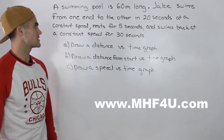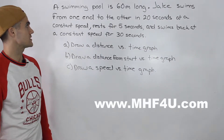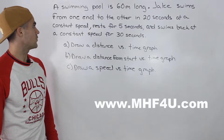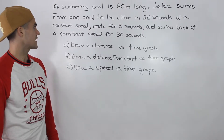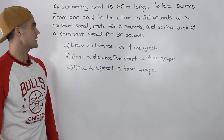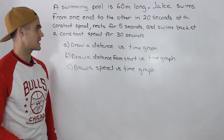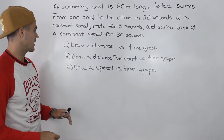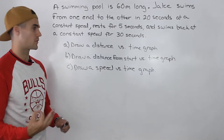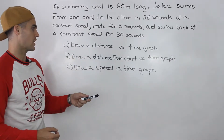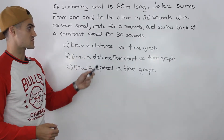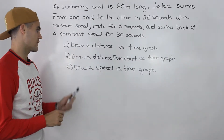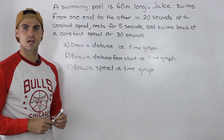Moving on to another example. A swimming pool is 60 meters long. Jake swims from one end to the other in 20 seconds at a constant speed, rests for five seconds, and then swims back at a constant speed for 30 seconds. We have to draw three graphs: a distance versus time graph, a distance from the start versus time graph, and a speed versus time graph.